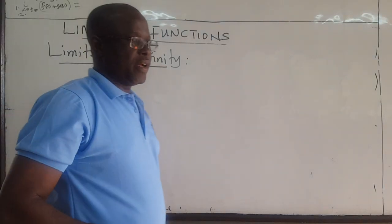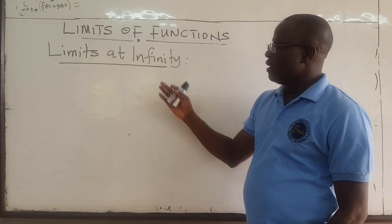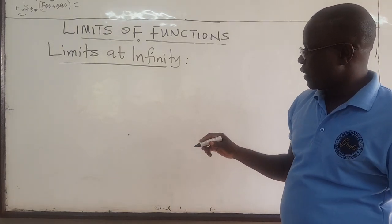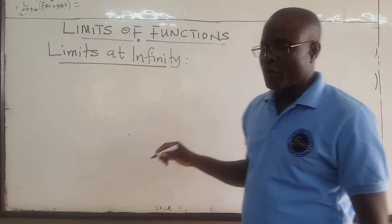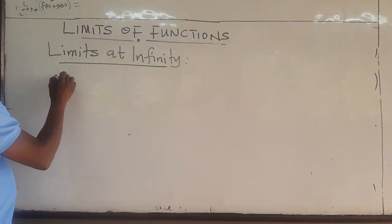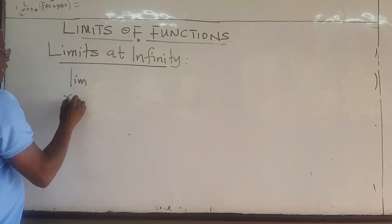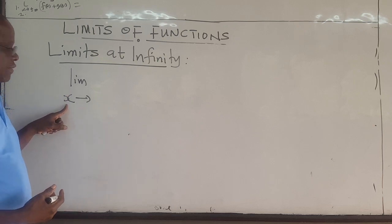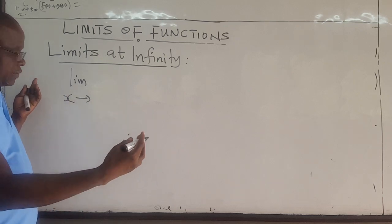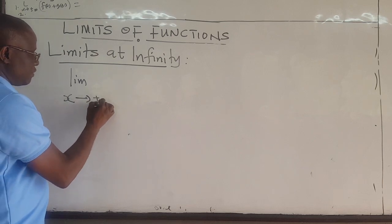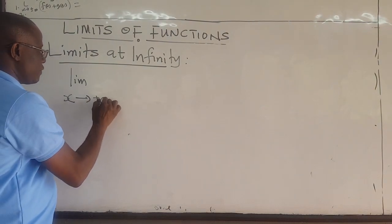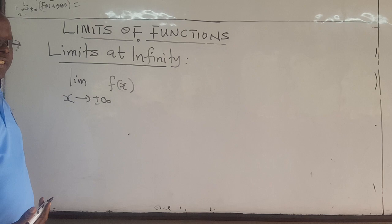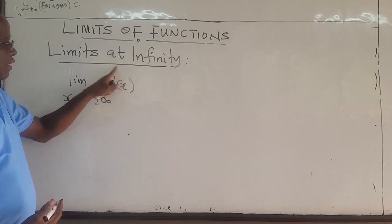Hello, guys. So, we want to start looking at limits at infinity. I already mentioned this a little bit in my last lecture. So, what we want to find out is what happens — so far we've been looking at x approaching some number. What happens if this x, this independent variable, increases without bound? It's approaching either positive or negative infinity. How do you find the limit as x approaches infinity of some function?